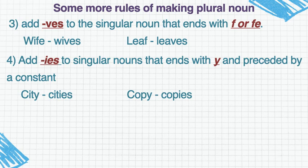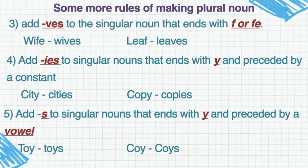Example: city — city में पीछे Y आएगा और Y के आगे लिखा हुआ है T, and T is a consonant. तो city का plural करने के लिए Y को हटा कर Y की जगह पर हम IES लगाएंगे — cities. Same way copy का बनेगा copies. यहाँ पर rule भी लिखा हुआ है: add S to singular noun that ends with Y and preceded by a vowel. अगर Y के आगे vowel है तो हम सिर्फ S लगाएंगे. Toy — toys. Boy — boys.